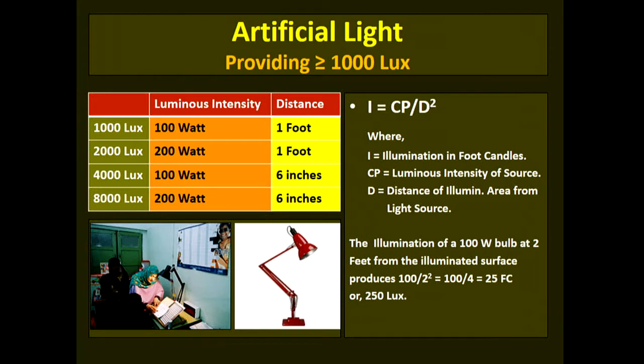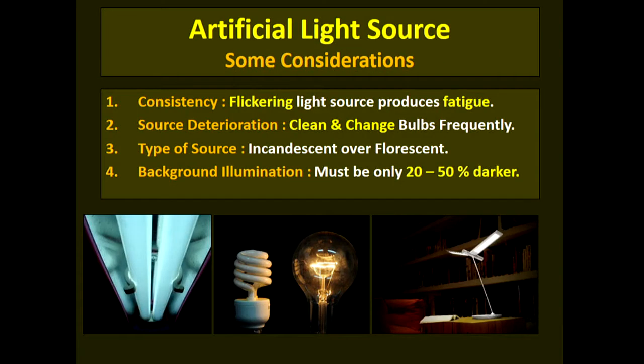For example, a 100-watt lamp kept one foot away from the object gives 1,000 lux of illumination. A 200-watt lamp at one foot gives 2,000 lux. And a 200-watt bulb at 6 inches distance gives 8,000 lux. This is how you play with the wattage of the bulb and the distance from the object of regard.